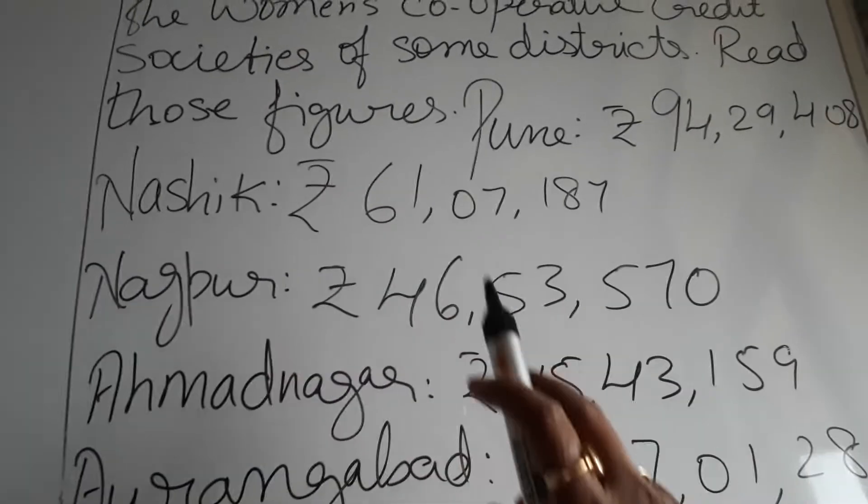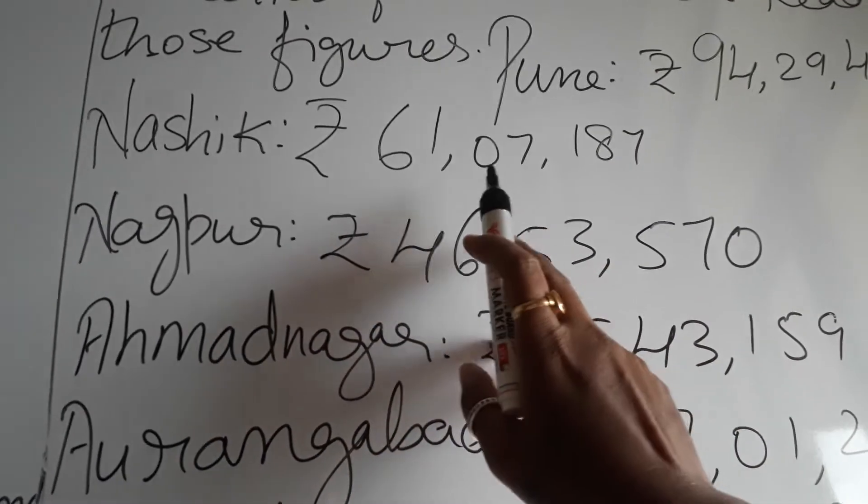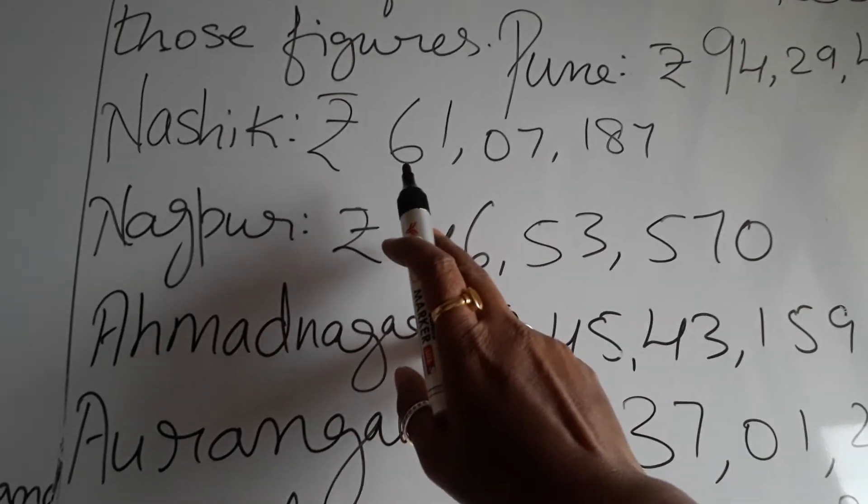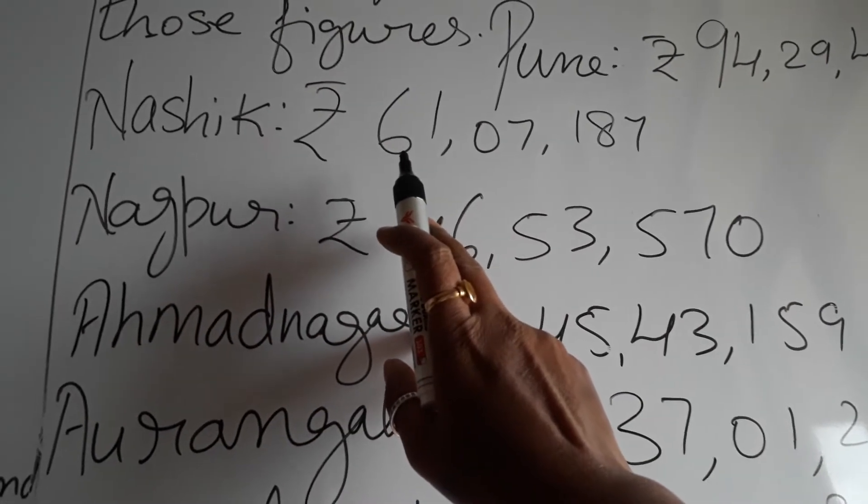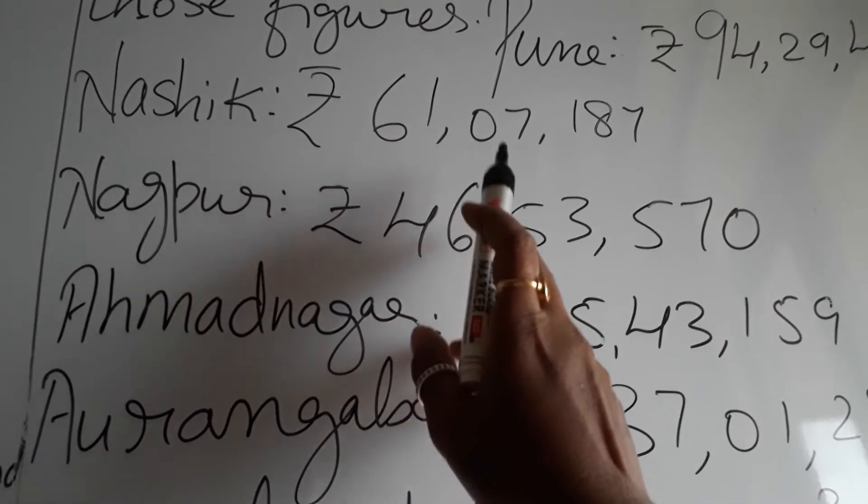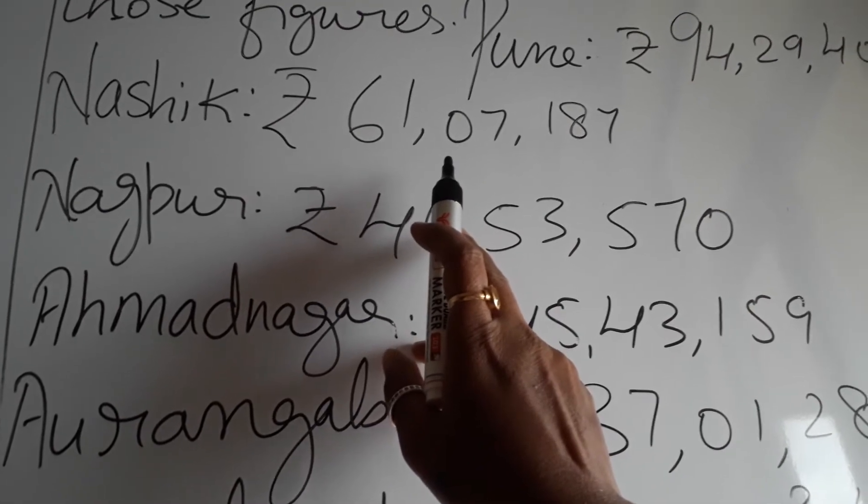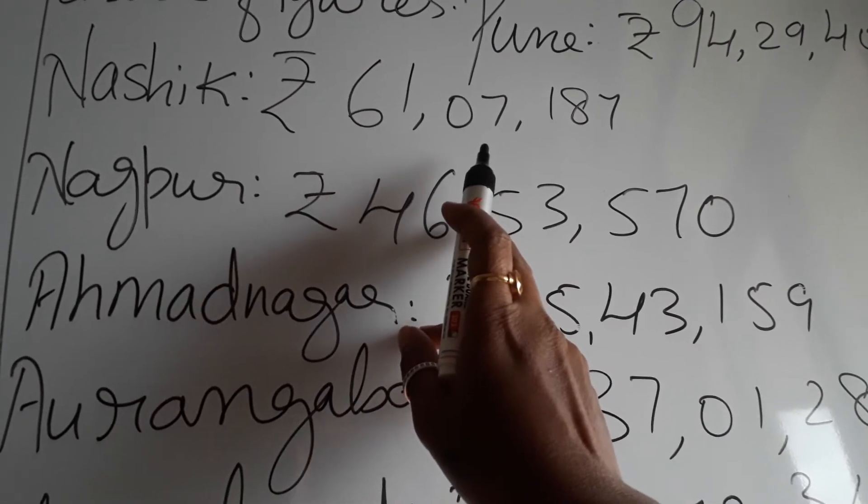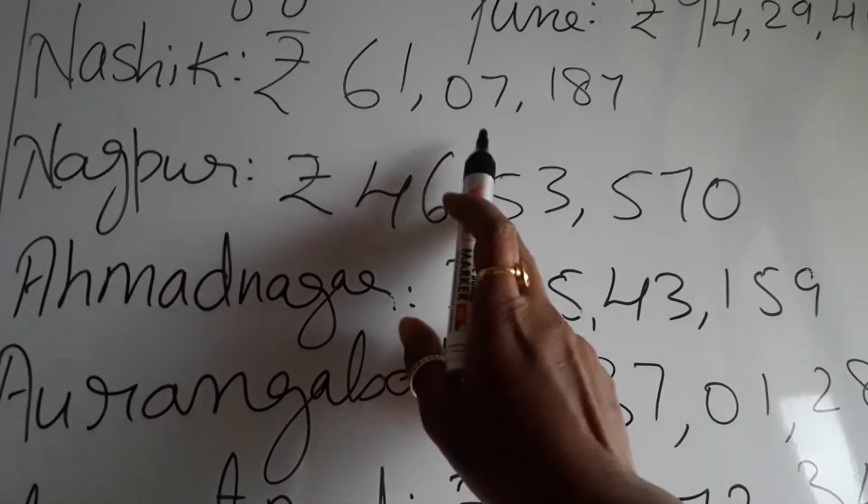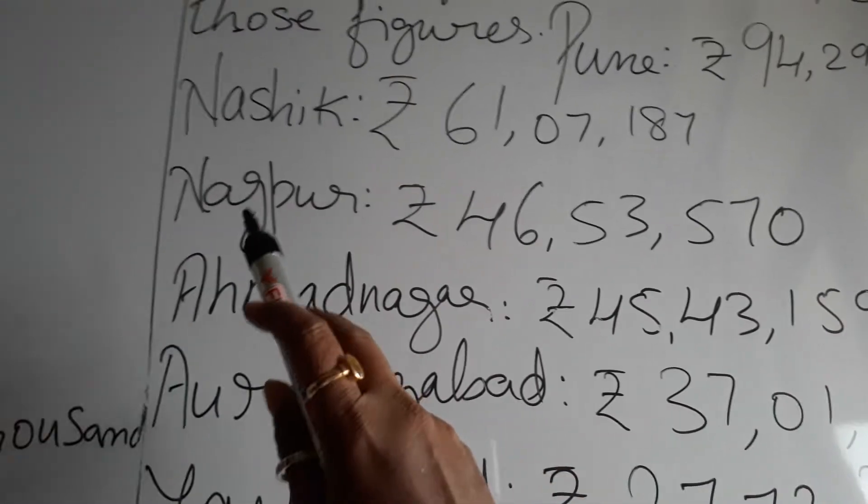Nashik. If I don't know what I'll do - you need units, hundreds, thousands, ten thousands, lakh, ten lakh. Six is in ten lakhs place - 60 lakh. One lakh. So 61 lakh, 7,000 because nothing in ten thousands place. Seven is in thousands place, so 61 lakh, 7,187.